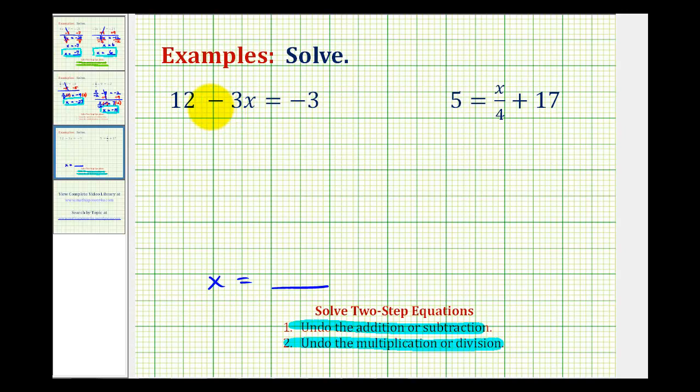It might be tempting to try to add three to both sides, but notice how this three is attached to the x by multiplication. So the first step in this equation is to eliminate or undo this positive 12 by subtracting 12 on both sides of the equation.